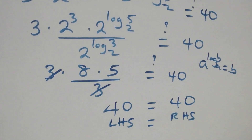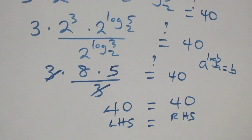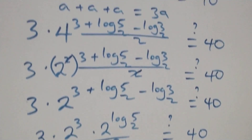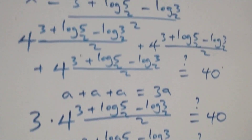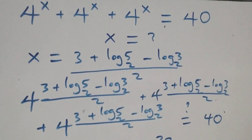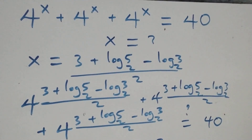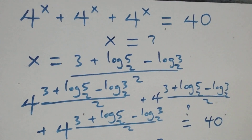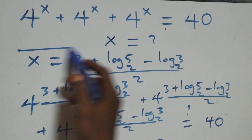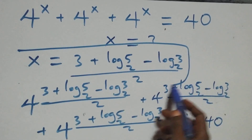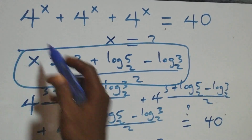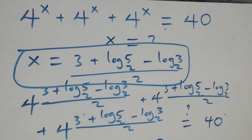Therefore, we conclude that x equals (3 plus log₂5 minus log₂3) all over 2 satisfies this given problem.